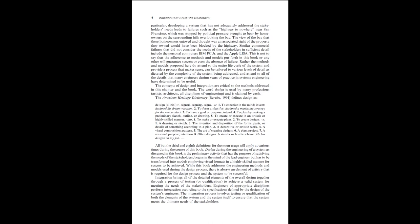All but the third and eighth definitions for the noun usage will apply at various times during this book. Design during the engineering of a system is discussed as the preliminary activity that has the purpose of satisfying the needs of the stakeholders. It begins in the mind of the lead engineer but has to be transformed into models employing visual formats in a highly skilled manner for success to be achieved. While this book addresses engineering methods and models used during the design process, there is always an element of artistry required for the design process and the system to be successful.